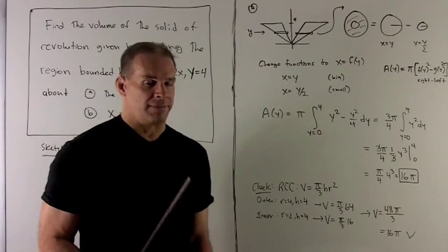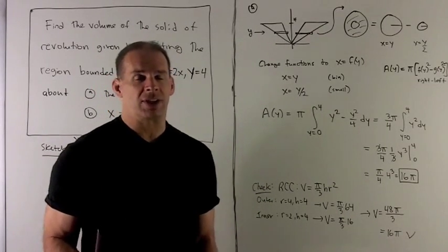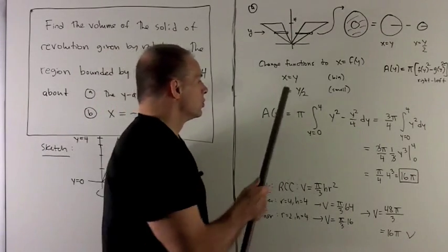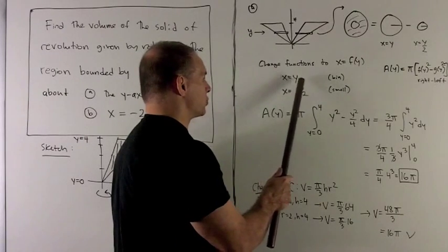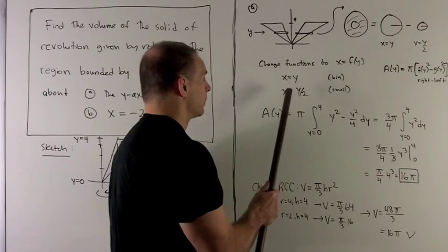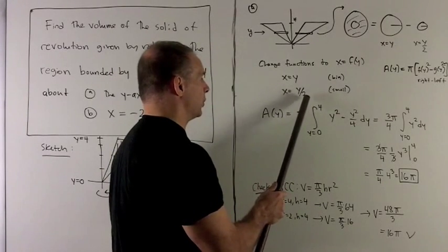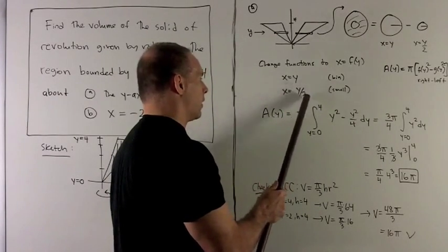Also, we have functions as y is a function of x. Well, here we want to reverse that. We want x as a function of y. So for y equals x, it's no problem. Just reverse the order. And then for y equals 2x, we just divide both sides by 2 to get x as y over 2.